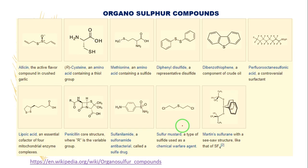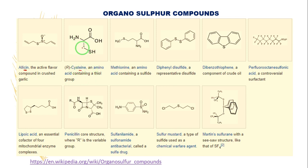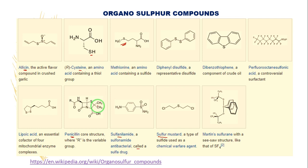Let us discuss different kinds of organosulphur compounds which exist in our life. For example, allicin is the active flavor compound in crushed garlic. Cysteine is an amino acid which contains a thiol group. Methionine is also an amino acid containing a sulfide group. There are other important molecules such as penicillin, which is an antibiotic, sulfonamides — also called sulfur drugs — and sulfur mustard. All these compounds are considered organosulphur compounds where sulfur is directly connected to carbon.